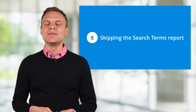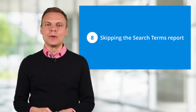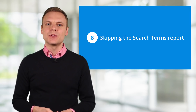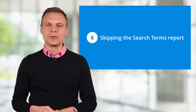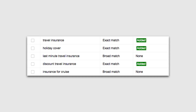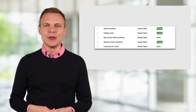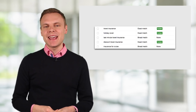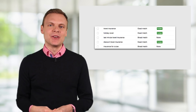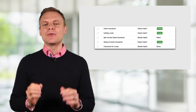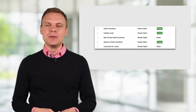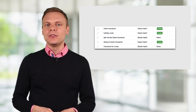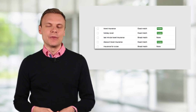Mistake number 8 is not using the search terms report. Because of the keyword match types, there's a difference between the keyword you're bidding on and the search term that someone enters when they're on Google. The search terms report allows you to see what people are searching for. You'll find the report within the keywords tab — just click on search terms. You should spend time here on a regular basis reviewing the search queries and deciding if they're good, in which case you should add them to an ad group, or if they're not good, add them as a negative keyword.